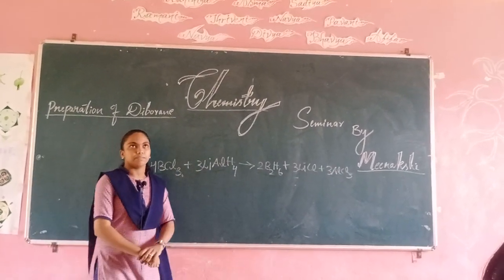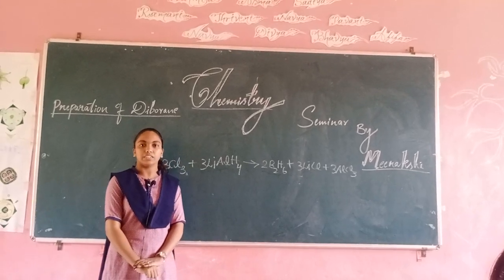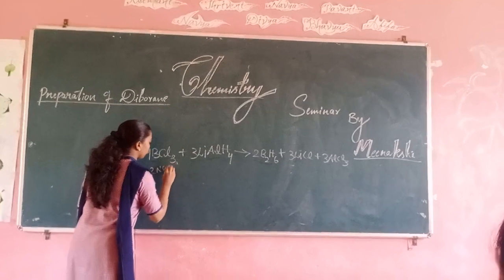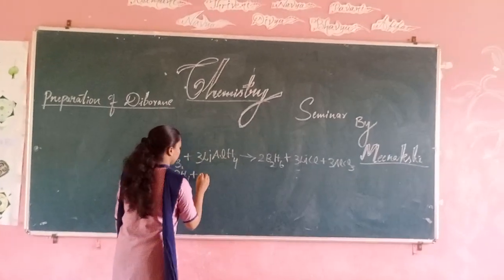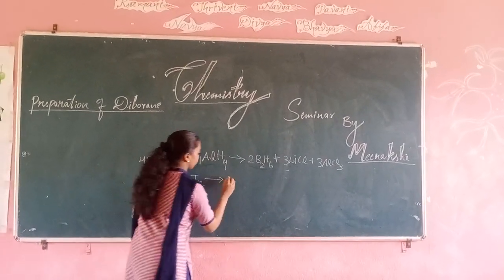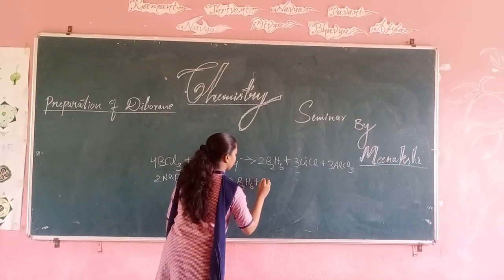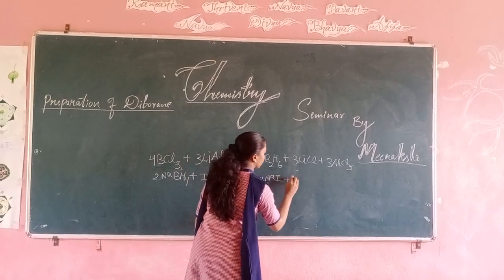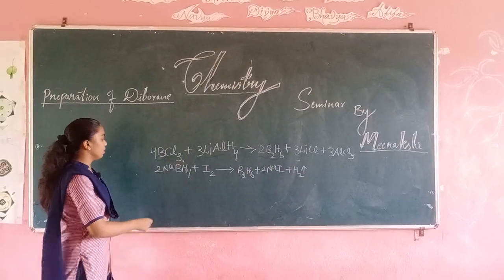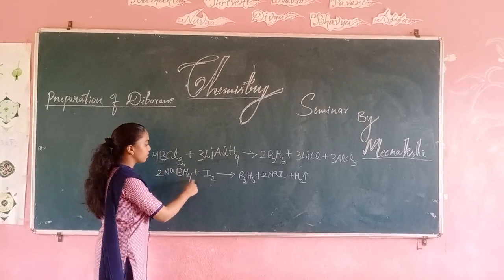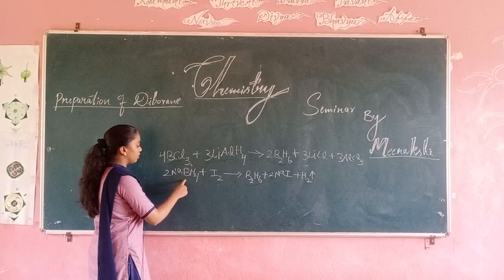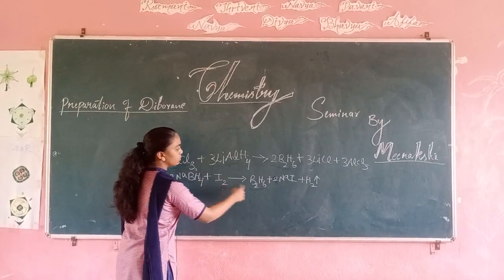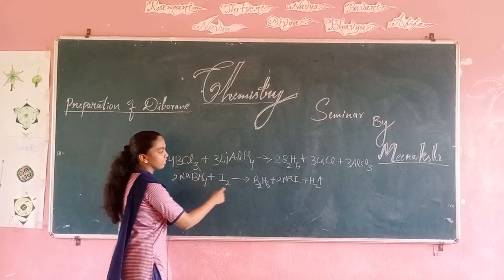After that, sodium borohydride reacts with iodine to form Diborane. 2 atoms of NaBH₄ react with iodine to form Diborane — 2 atoms of Boron reacting with 6 atoms of Hydrogen. 2 atoms of Sodium react with I₂ to form NaI, and H₂ is produced.